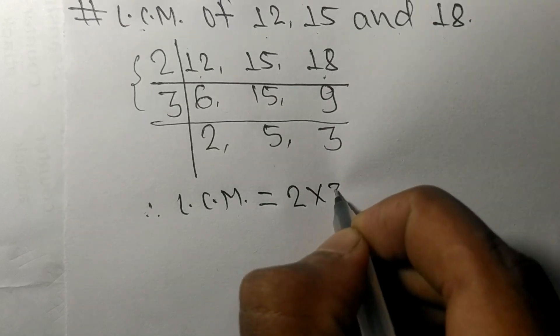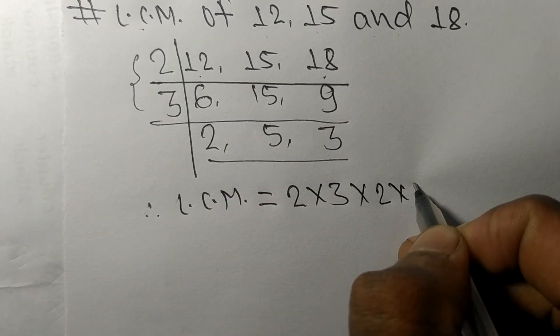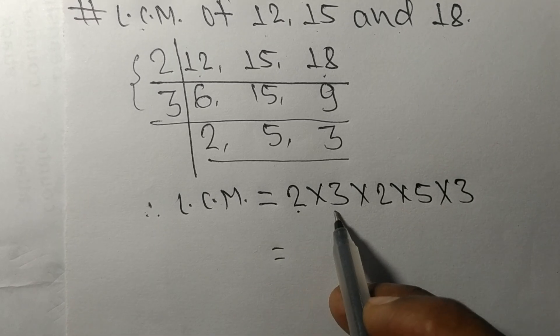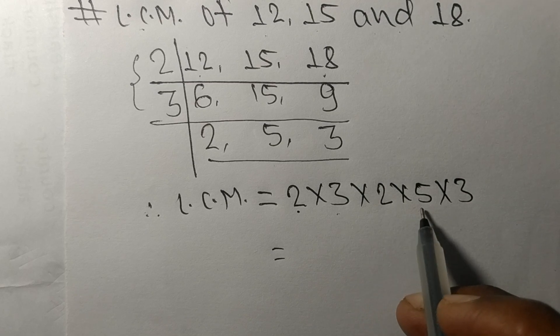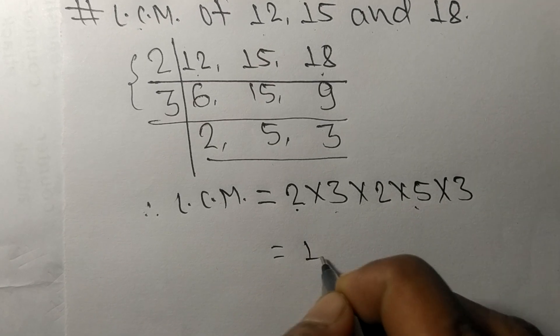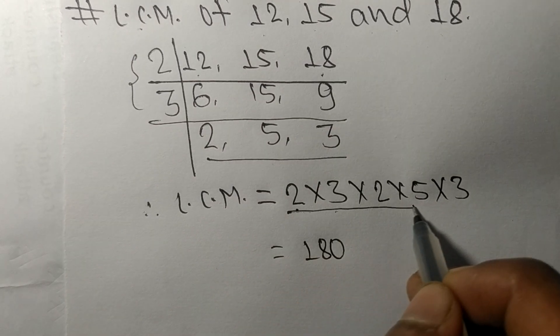2 times 3 means 6, 6 times 2 means 12, 12 times 5 means 60, 60 times 3 means 180. So by multiplying all